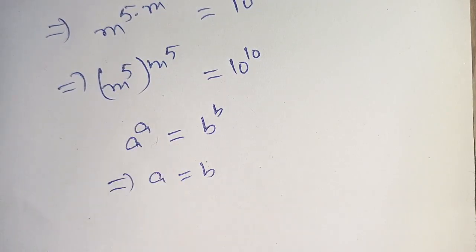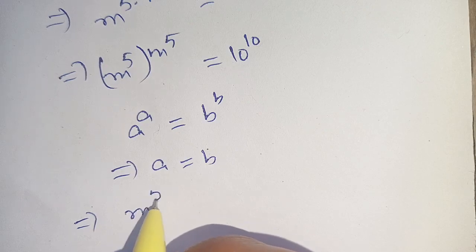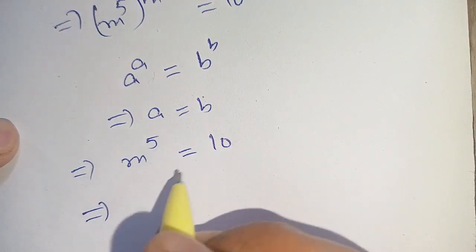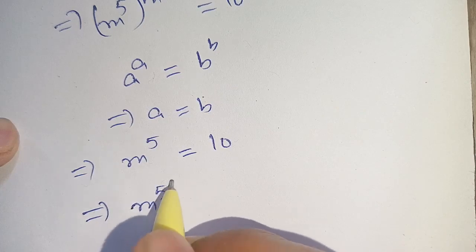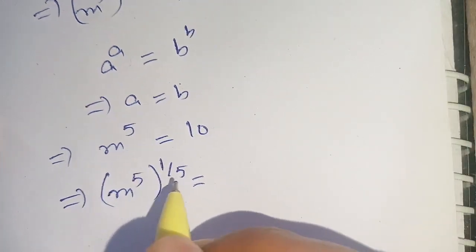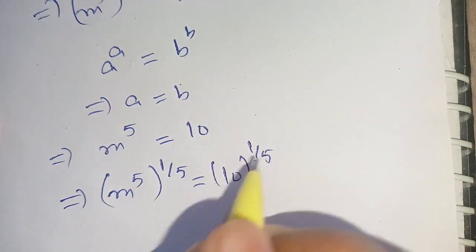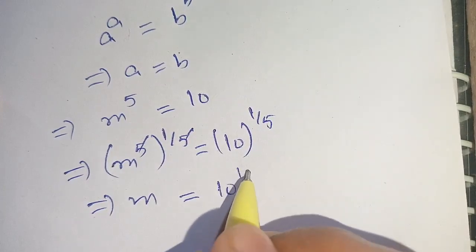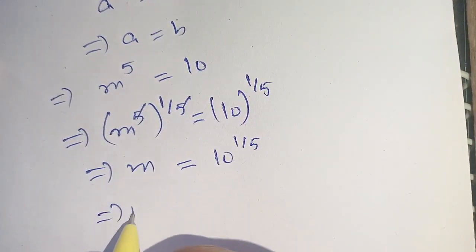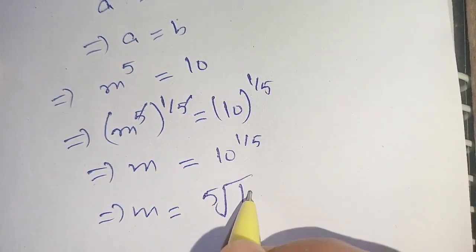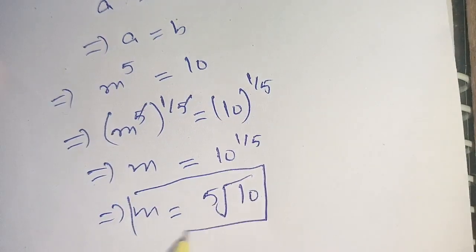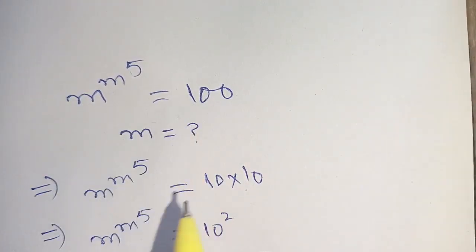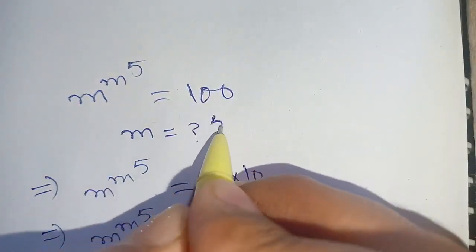On comparing a is equal to b, we have m raised to the power 5 is equal to 10. Taking the power 1 divided by 5 on both sides, m raised to the power 5, bracket power 1 divided by 5, is equal to 10 raised to the power 1 divided by 5. We cancel out the 5s, giving m is equal to 10 raised to the power 1 divided by 5, or the 5th root of 10, which is the required value of m satisfying the equation m raised to the power m raised to the power 5 is equal to 100.